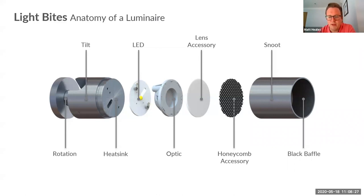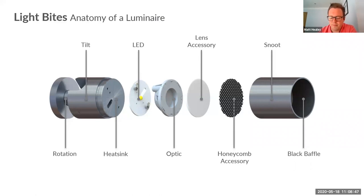Sometimes you need some extra bits and pieces like barn door accessories and honeycombs to give that extra bit of control. Often with the John Cullen product, you'll see a black baffle snoot design, which gives us glare control so we can give you the light where you need it, but without causing any unnecessary headaches.